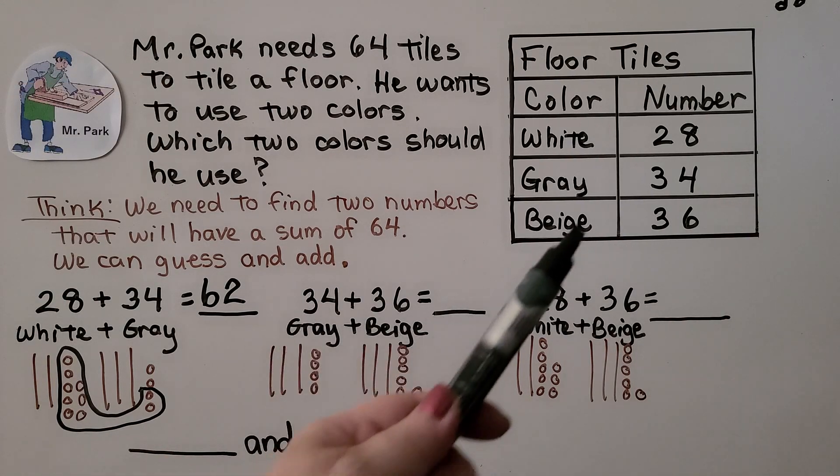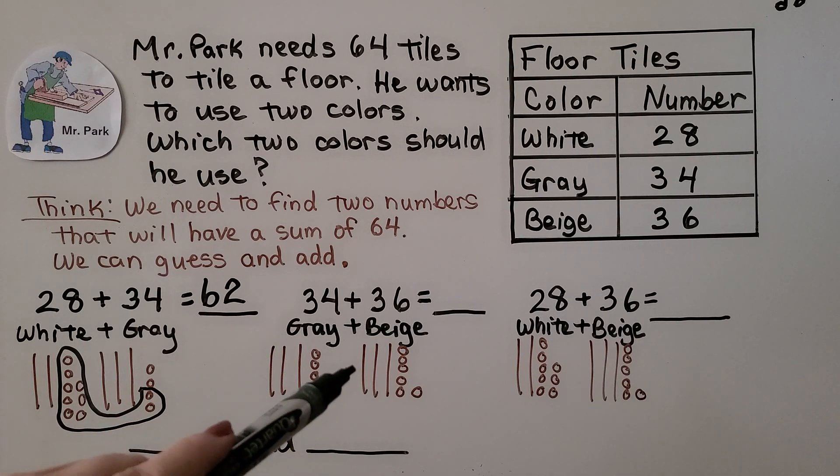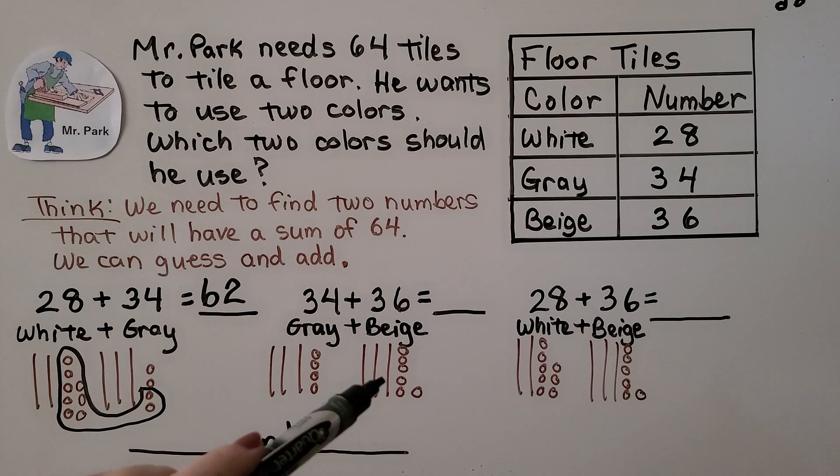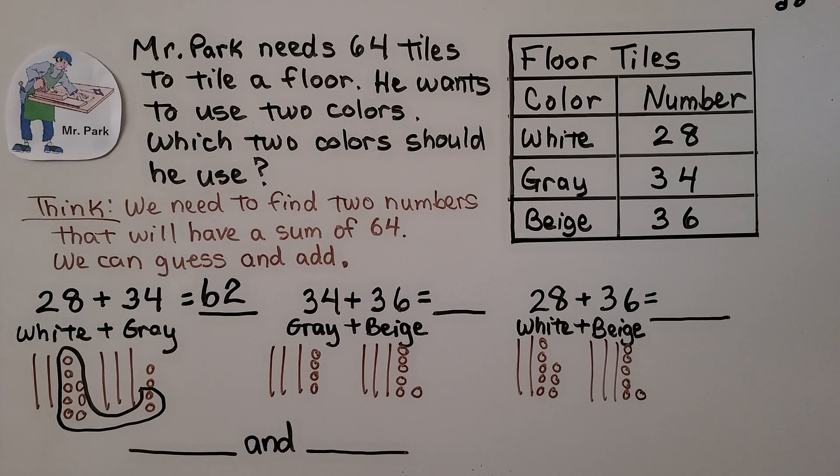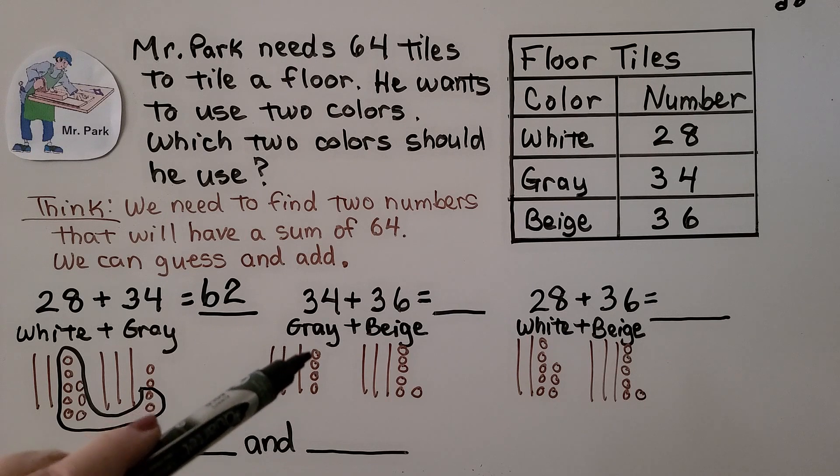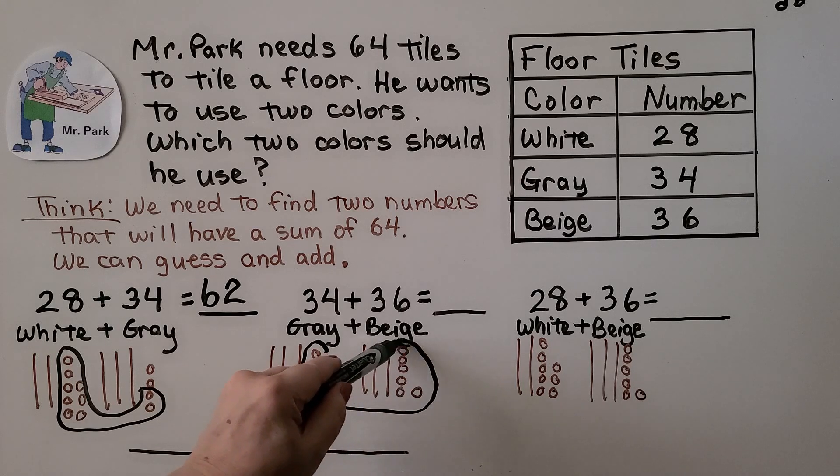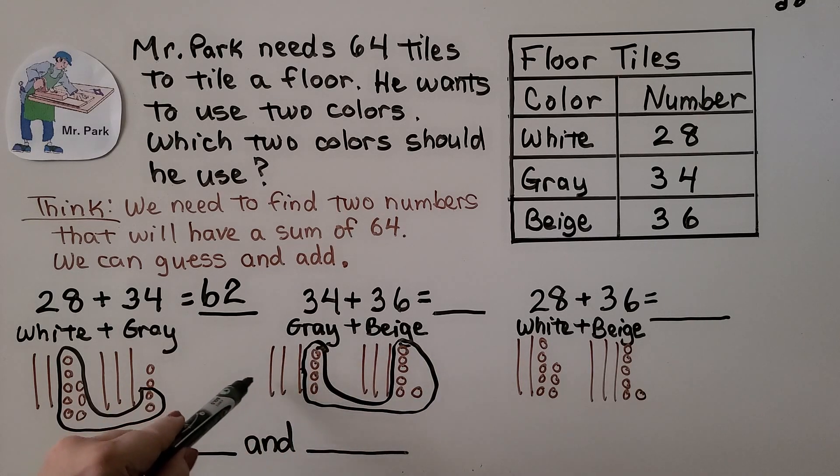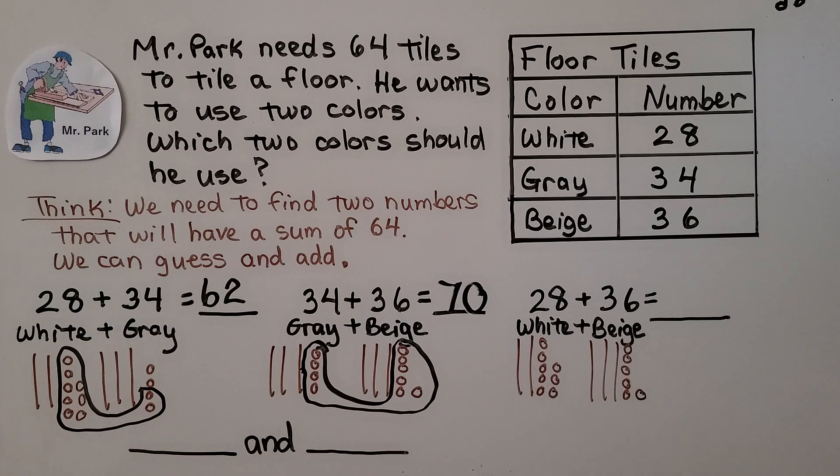So let's try gray, which is 34, and beige, which is 36. He needs 64. And we look and we've got three tens, four tens, five tens, six tens. But we only need four more ones. And look, we've got a lot more than four ones. We don't even need to add this to know. But let's do it anyway. We've got six here, seven, eight, nine, ten. If we circle all the ones, that will make another ten. Now we've got three tens, four tens, five, six, seven tens. That's 70. That's too many.